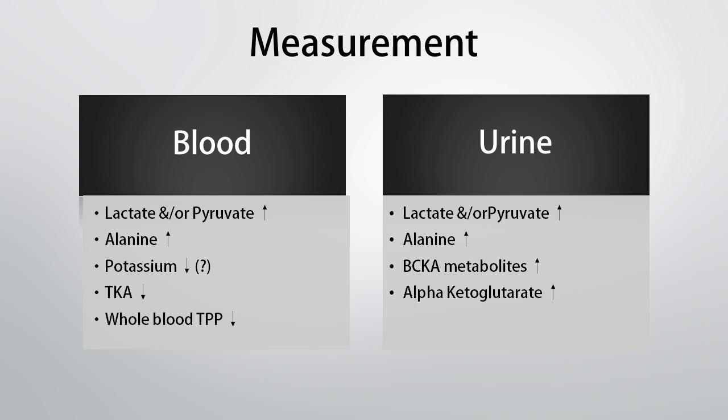Instead, we want to look at several other markers which can give us either a direct or an indirect measurement of thiamine status. Many indirect measurements look at how the body is using thiamine — if it can't use thiamine very well, the consequences produce elevations in other markers. For instance, there are elevations in lactate or pyruvate found in blood or urine. Likewise, the amino acid alanine, if elevated, can be an indirect marker. On a urinary organic acids test you might see elevated branched chain keto acid metabolites, and you may also see elevations in alpha-ketoglutarate.